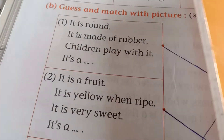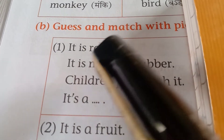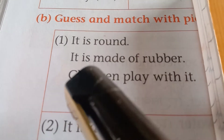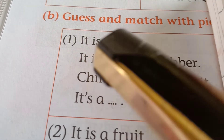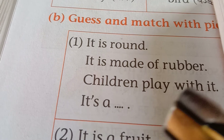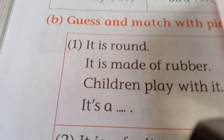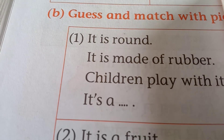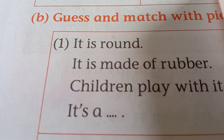अशाच काही riddles आपण इथे अभ्यासणार आहोत. पहिली riddle आहे: It is round. It is made of rubber. Children play with it. तो गोलाकार असतो, rubber पासून तयार झालेला असतो, मुले त्याच्याबरोबर खेळतात. ओळखलं ना त्याला? त्याला काय म्हणतात? बॉल. Okay.